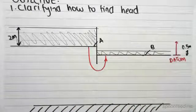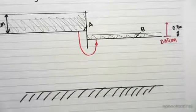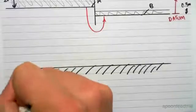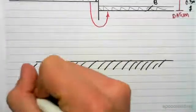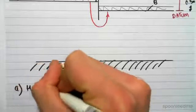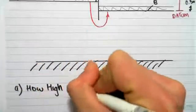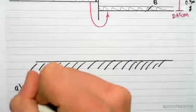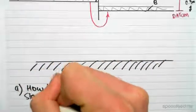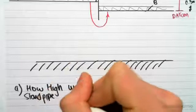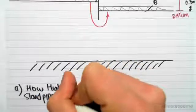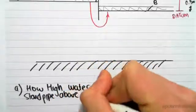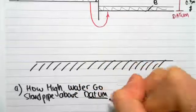Now head, we can think of in two ways. We're going to define it in two ways. The first way is we need to ask how high does water go if we were to stick a standpipe? If we were to stick a standpipe, how high would the water go above the datum? It needs to be above the datum.